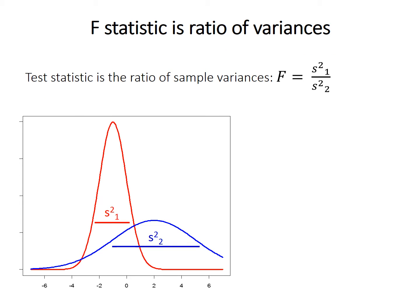The F-test is based on a very simple statistic. It's just the ratio of the two sample variances: s²₁, variance of sample 1, divided by variance of sample 2.